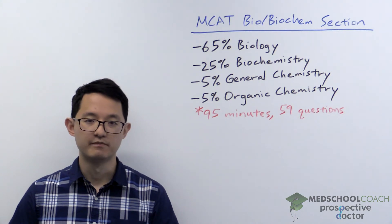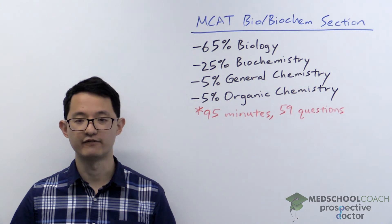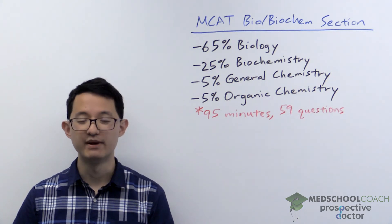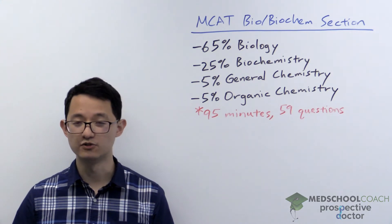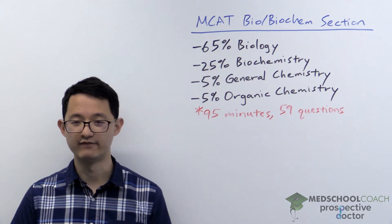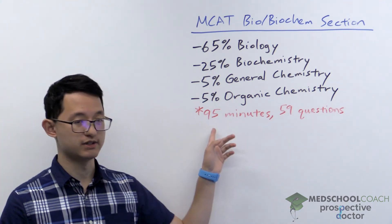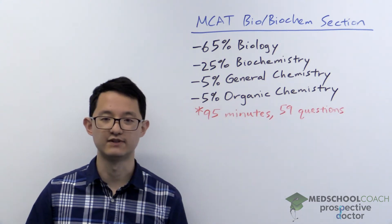Now the biochem section can be challenging for a lot of students and here are a few reasons why. Number one, this is the third section of the exam. You're starting to get fatigued after already taking two whole sections, the chem phys and the CARS section of the MCAT. But the time constraints are the same as all the science sections. It's still 95 minutes and 59 questions.